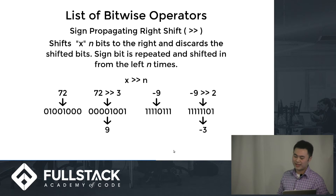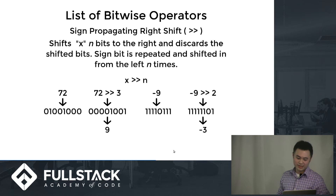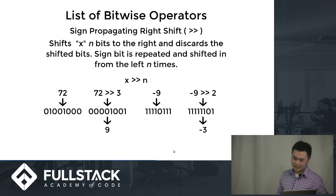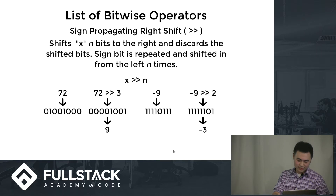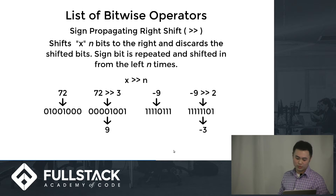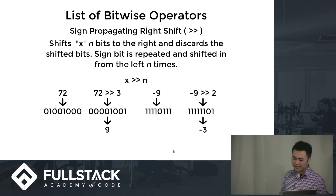Now we have a sign propagating right shift. It's like a left shift but in the opposite direction. Instead of filling in with zeros, it fills in with the sign bit. So if your number is negative, it shifts ones in from the left to replace the bits discarded from the right. For example, 72 has a leftmost bit of 0, so when you shift 3 to the right it fills in with zeros. But for negative 9, the sign bit is 1, so when you shift 2 to the right it replaces the shifted bits with 1s.